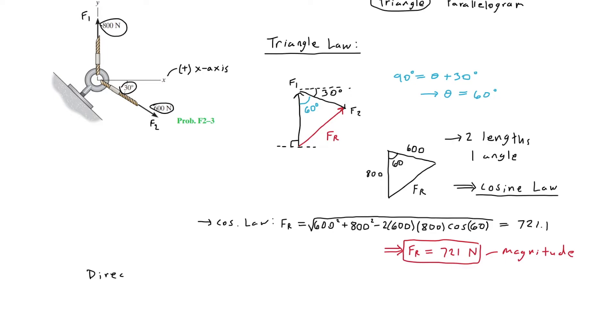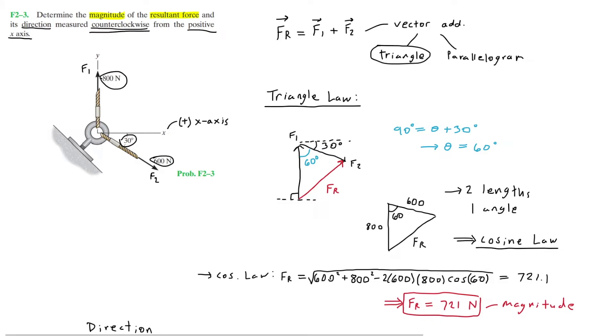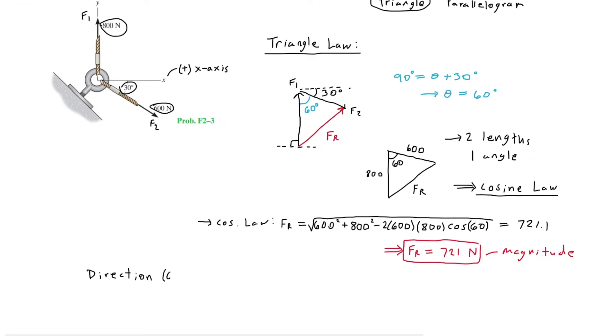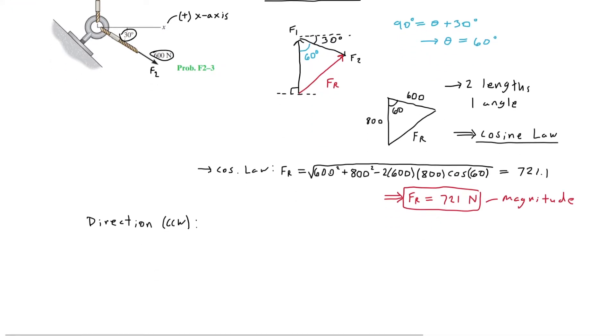Now we need to find the direction of this magnitude, and again it's measured counterclockwise from the positive x-axis. Here on the drawing, this is our positive x-axis, and that is the angle measured counterclockwise.